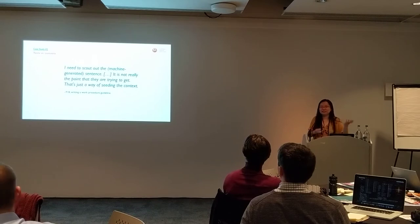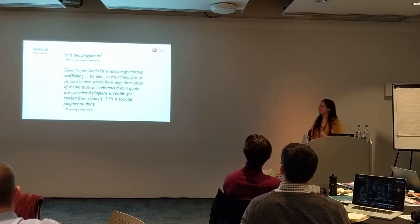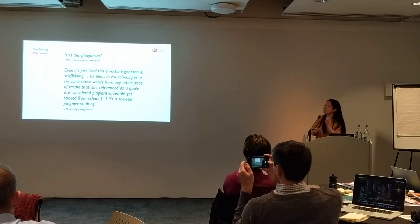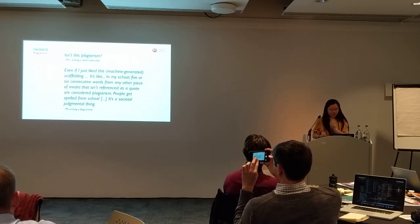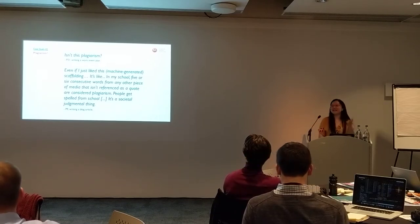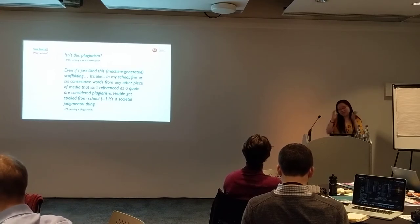I told him this is machine-generated text — there isn't really a context, you cannot find the context. Then the person said: 'Wait, isn't this plagiarism? I was told that if you use six consecutive words from another piece of article, you need to cite it, otherwise it is not right.' So I was essentially lectured about how using some other passage or text from another source without citation is not ethical.